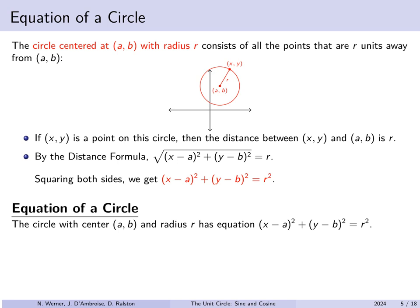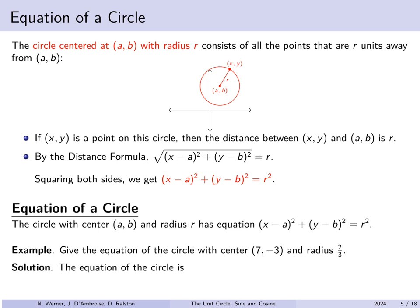For example, give the equation of the circle with center 7, negative 3 and radius 2/3. The center is (7, negative 3) and the radius r is 2/3. Plugging into the formula we get x minus 7 squared plus y minus negative 3 squared equals (2/3) squared. We can simplify this a little bit: x minus 7 squared plus y plus 3 squared equals 4/9.